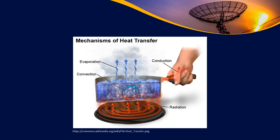There is conduction, which is when you're physically touching something. If you go outside barefoot in the summertime and touch the pavement, you'll feel it's really hot — that's conduction. Or if you touch a hot pan, that's conduction. Convection is the flow of air that helps dissipate heat — if I leave a hot pie out, the colder air around it is going to tend to absorb that heat.